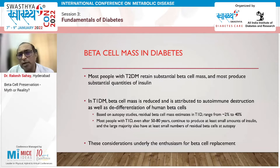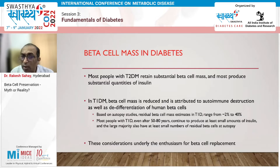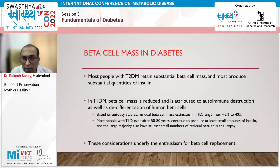In type 1 diabetes, we generally say that beta cell function is completely gone, but autopsy studies have shown that 2 to 40% of beta cell function is still preserved in many type 1 diabetics. So there is some amount of beta cell mass left even in type 1 diabetes, and there is scope for its regeneration.